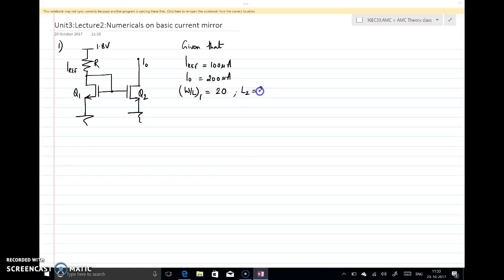L2 is given as 2 micrometers, and the transistor parameters are μn Cox equal to 100 microamps per volt squared and Vt is equal to 0.5 volt. So you are supposed to find w2 and R - these are the questions.